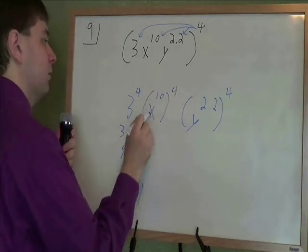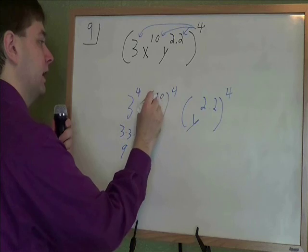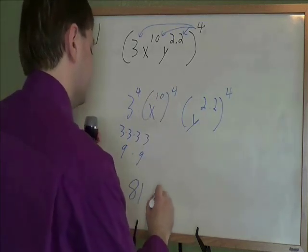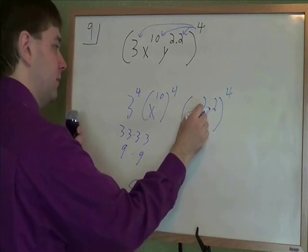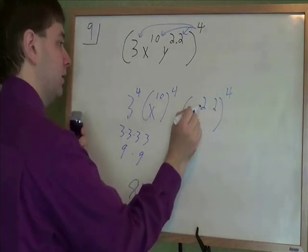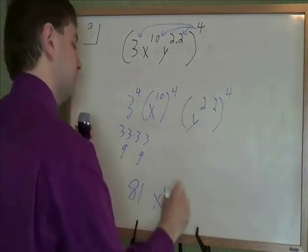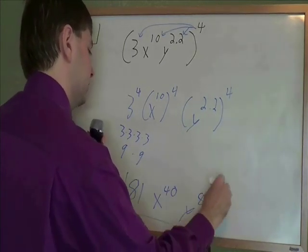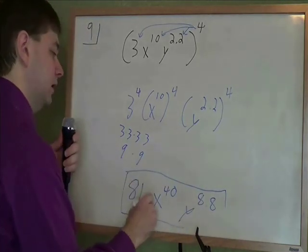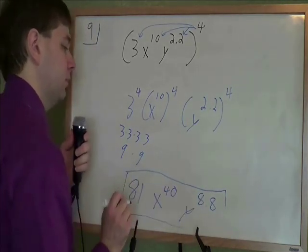x to the 10 to the 4. When you have a power to a power like that, you multiply. 10 times 4 is 40. And if you have a decimal or a fraction, same thing, same rule. Power to a power, you multiply. 2.2 times 4 is 8.8. And that is your answer, 81, x to the 40, y to the 8.8.